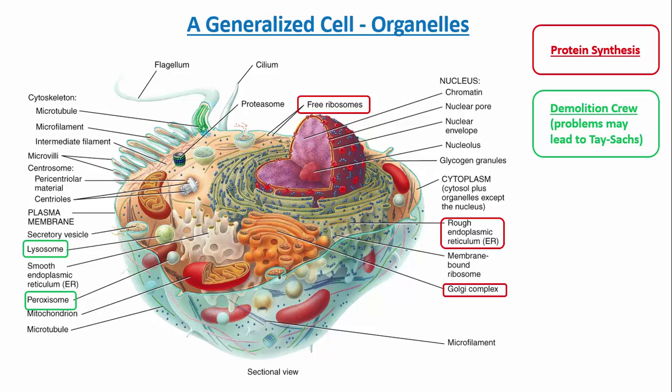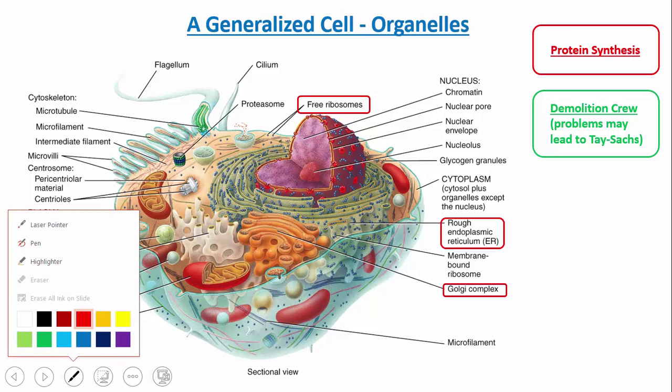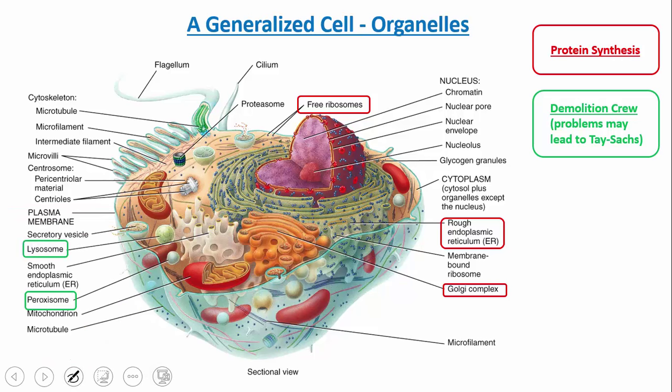Whenever you have problems with these structures, it can lead to many things, but specifically to something called Tay-Sachs. It's a disease with a lot of neurological conditions, and it results because of problems in breaking down the waste products of the cell.